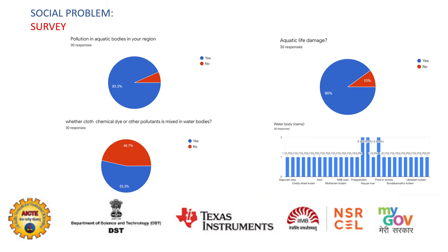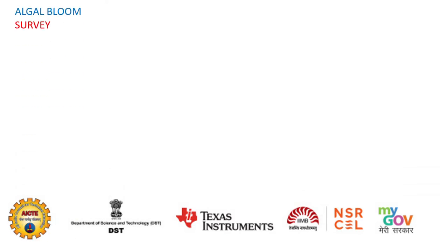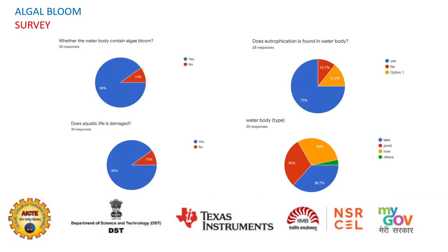The survey covers aquatic life damage, and responses are pictured here. The next is the algal bloom survey — water bodies contain algal bloom and eutrophication. Certain questions were asked to 30–35 members and the responses are pictured here.